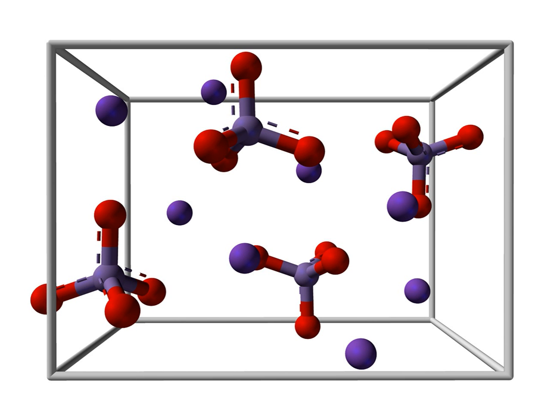Potassium manganate is the inorganic compound with the formula K2MnO4. This green-colored salt is an intermediate in the industrial synthesis of potassium permanganate, a common chemical.